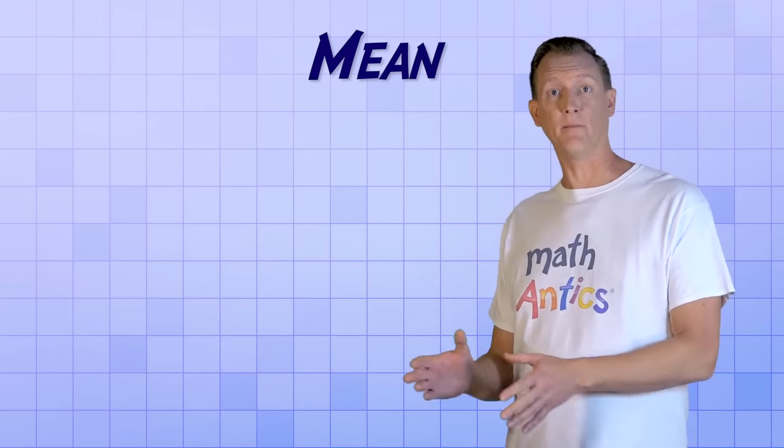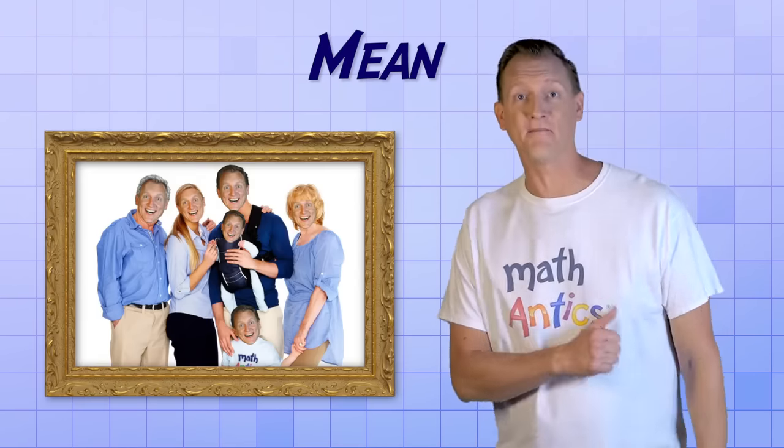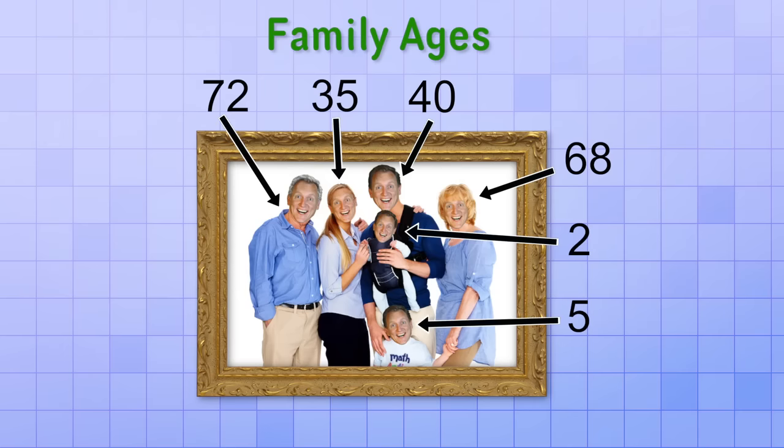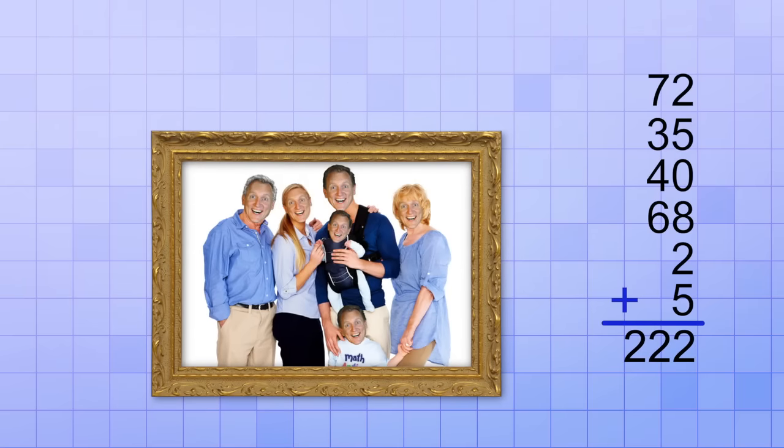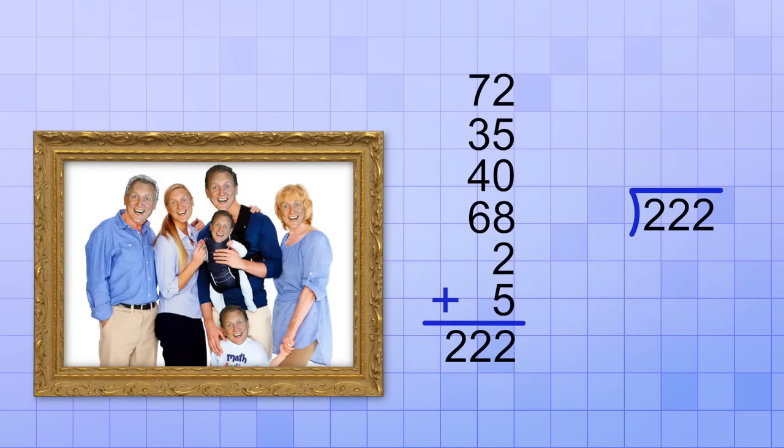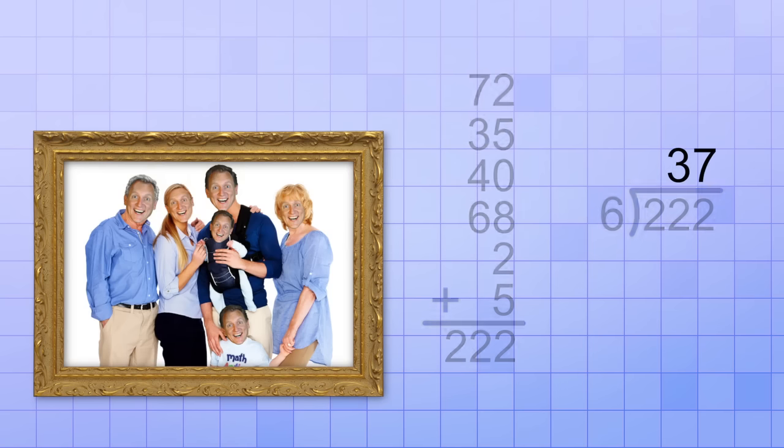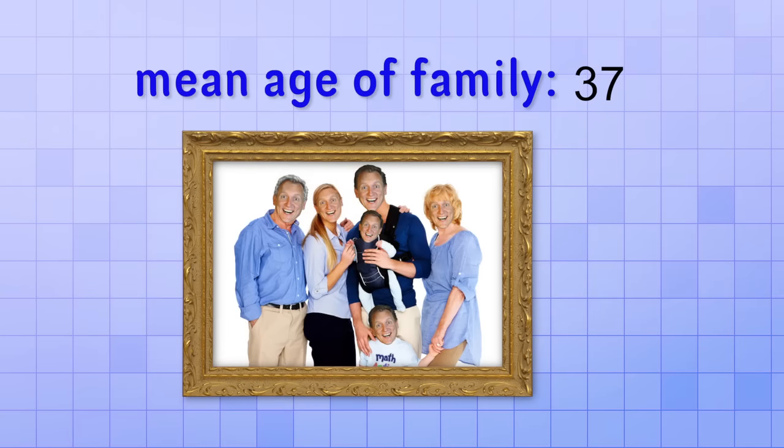Let's use that procedure to find the mean age of the members of this fine-looking family here. If we add them all up using a calculator, or by hand if you'd like, the total of the ages is 222 years. But then, we need to divide that total by the number of ages we added, which is 6. 222 divided by 6 is 37. So that's the mean age of all the members in this family. Alright, that's the mean.